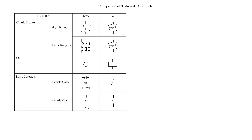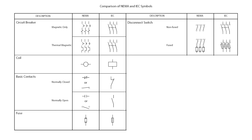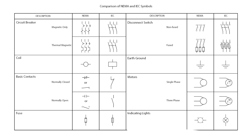Here we have the basic contacts. For contacts, there are two different types: the normally closed contacts and the normally open contacts. Here are the symbols for a fuse. There are two types of disconnect switches — the non-fused and the fused. This is the symbol for a ground. Here are the symbols for motors — we have the single phase and the three phase. The last symbols in this table are the indicating light, sometimes referred to as the pilot light.